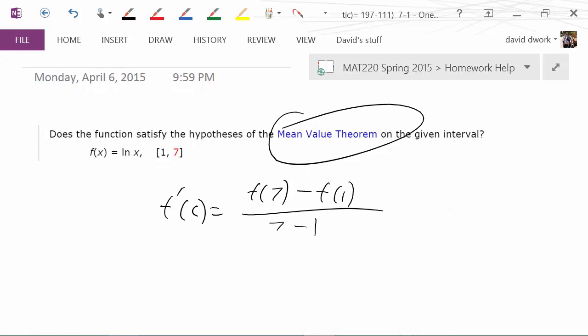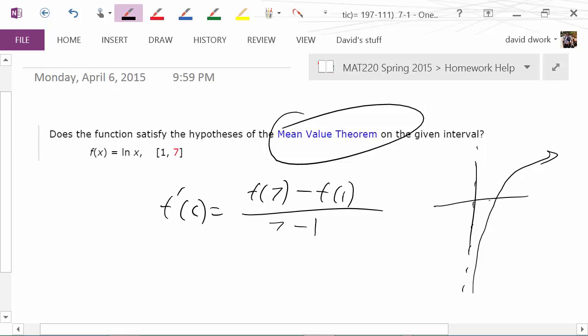If the function is continuous on the closed interval of one to seven, and because this is just the natural log function, we know it has an asymptote at zero, but that doesn't pose an issue from the values of one to seven. It would be continuous.